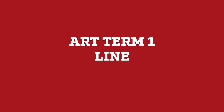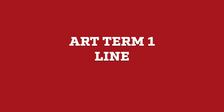Art Term 1: Line. A line is defined by a point moving in space. Lines may be two or three dimensional, descriptive, implied, or abstract. An example of this is the lines that are painted on the football field.